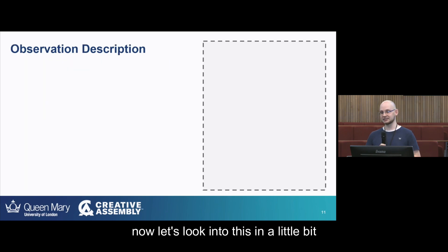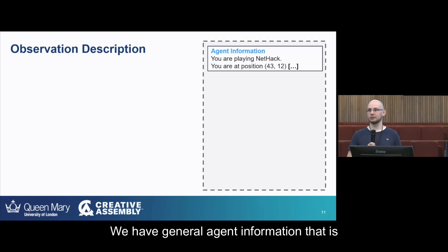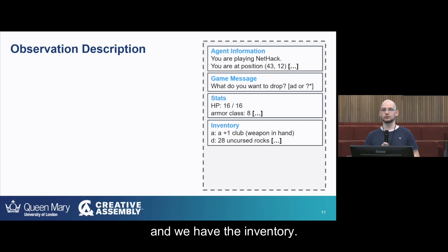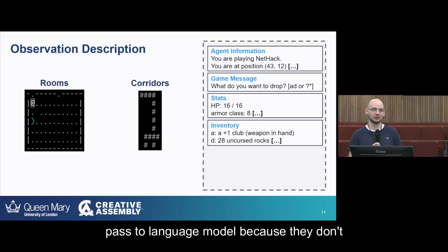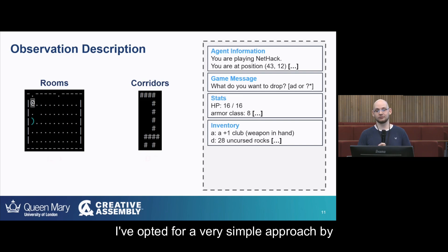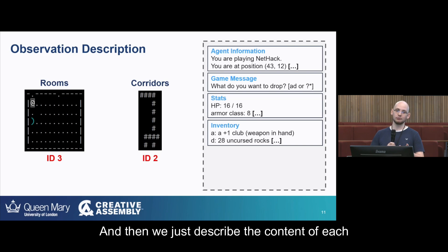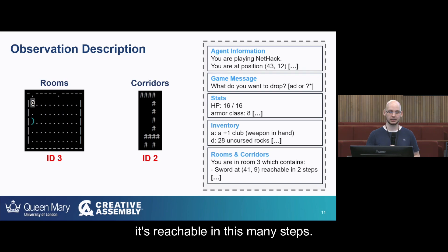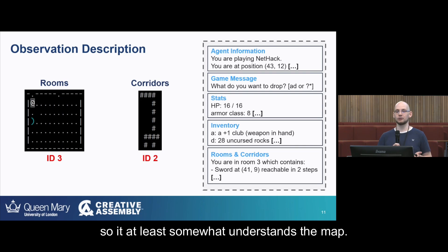How do we actually describe the game to the large language model? Most of it is relatively simple — we have general agent information, game messages, agent stats, and inventory, all as text, so we can pass it to the language model directly. But the most difficult thing is the map, which you cannot just turn into text and pass to the language model because it doesn't really understand it. I've opted for a simple approach: split the map into rooms and corridors, assign a unique ID to each, and then describe the content of each room. For example, room three contains a sword at this position and is reachable in this many steps. It's not perfect, but it provides some spatial awareness.